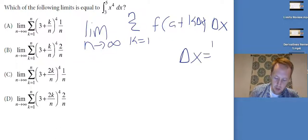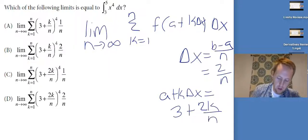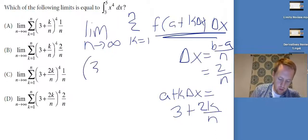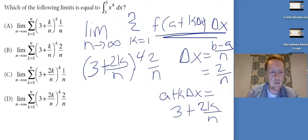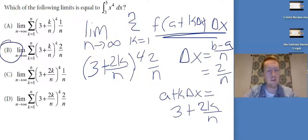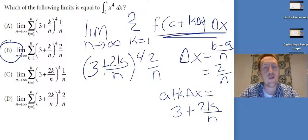Delta-x is b minus a over n, so for us that's five minus three, or two over n. Then a plus k·delta-x equals three plus two-k over n. So the underlined part becomes three plus two-k over n, to the fourth, times two over n. I'm looking for which of the answer choices matches — that would be B. If you're given the limit and asked which integral it matches, I recommend rewriting the integrals in limit notation and seeing which one matches, since it's more consistent to go from the integral to the limit.